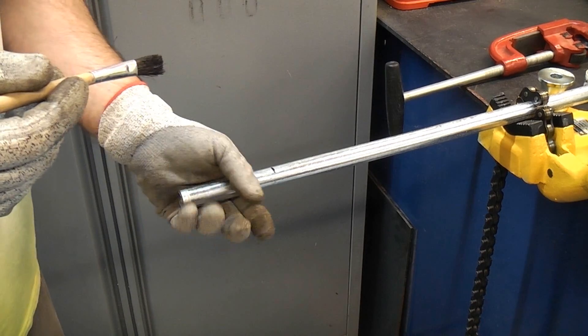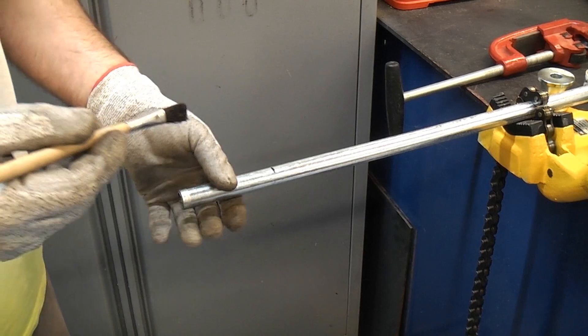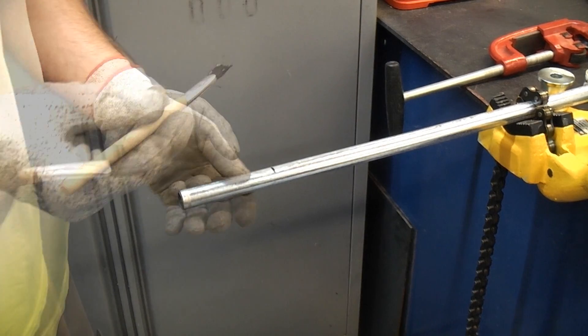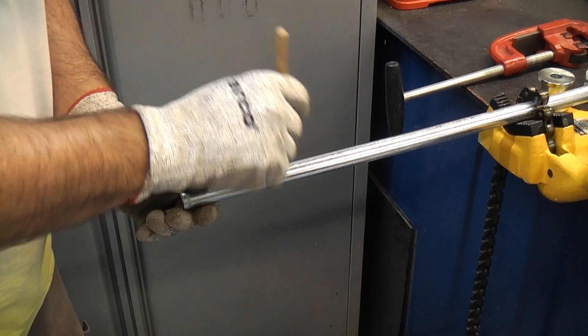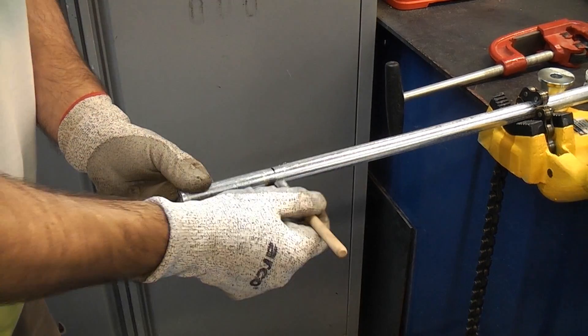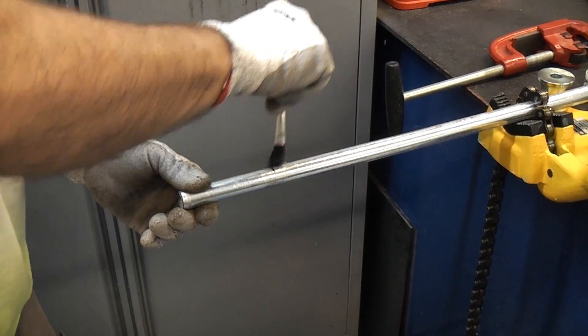There are several ways you can cut this. You can cut it quite easily with a hacksaw or a pipe cutter. Because we're going to be using the pipe cutter, I'm just going to apply some cutting paste to that and that will ensure that we get maximum life from our cutting wheel.